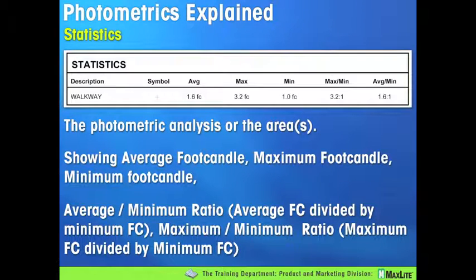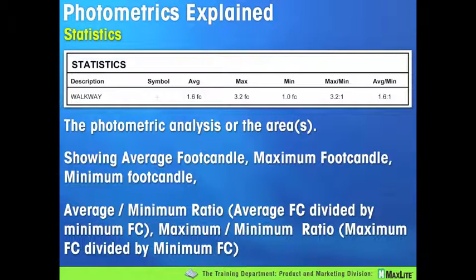The statistics section is the final summary. It includes a description of the location — walkway, parking lot, building facade — along with the fixture symbol, the average foot candles throughout the plotted area (in this case 1.6), and the maximum and minimum foot candles: 3.2 versus 1. That gives a max-to-min ratio of 3.2 to 1, which is not bad. The average-to-minimum ratio of 1.6 to 1 is also very good. This summarizes all the foot candle readings so you can see the highs, lows, and averages — which matters far more than any single spot reading.